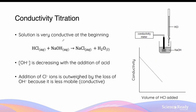Let's go through a conductometric titration between a strong acid and a strong base. Suppose the burette contains hydrochloric acid and the beaker contains sodium hydroxide. In the beginning, the sodium hydroxide solution is very conductive because sodium hydroxide is a strong base that completely dissociates to produce a large amount of hydroxide ions and sodium ions. As hydrochloric acid is added, the concentration of hydroxide ions decreases due to neutralization to form water.